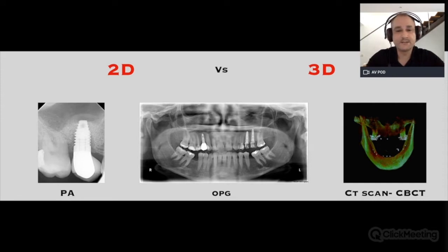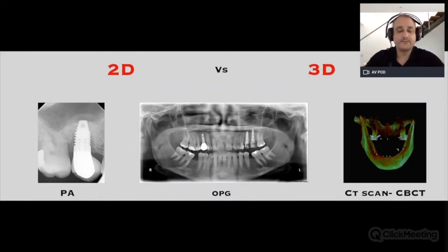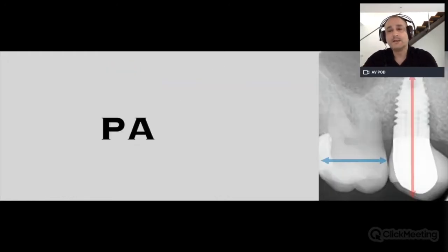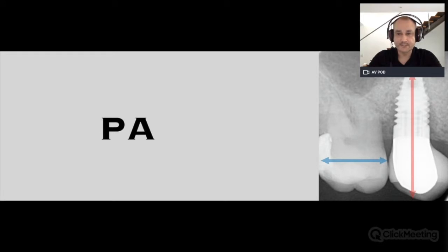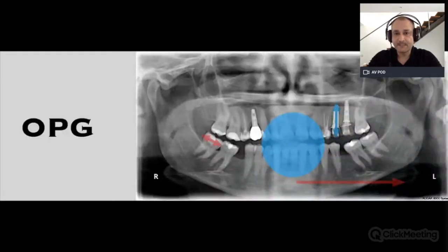Before going into depth on the CBCT, I'd like to make a comparison between 2D and 3D radiographs. The periapical radiograph is a very good tool because it's readily available and easy to use in any dental setup. It's very accurate and helpful in the mesiodistal or horizontal dimension for interproximal situations. It's not reliable, however, for checking the length of objects. The OPG is very good for a generalized idea about teeth, different structures, bone structure, and anatomy. It's relatively accurate in the anterior region of the mandible.